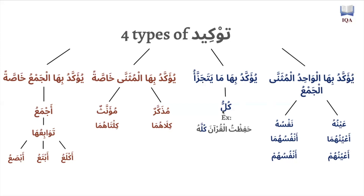The second type of tawqid is kullu, but kullu is only used to emphasize ma yatajazza' — what can be broken down into multiple parts. So you only use kullu (all/everything) to emphasize something that has multiple parts. For example, 'I memorized the Quran kullu' — all of it — emphasizing you memorized the entirety, not just one juz. You couldn't use kullu for Zaid because a human being cannot be broken into parts; you would have to use nafs or a'ayn.